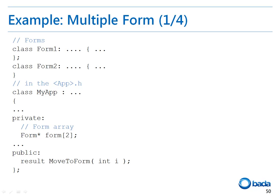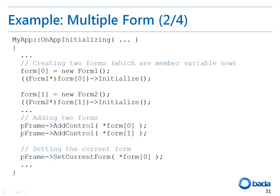As you can see here, I've declared two form classes. The application class has two form pointers. To switch forms more easily, I've declared the moveToForm function. This is the onAppInitializing function of the application. While the source code created by the template creates one form, in this function I've created two forms. After that, I've added each of the forms to the frame and set the current form as one of the two forms.